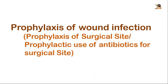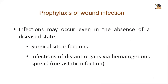In this video, we will explain prophylaxis of wound infection, or prophylaxis of surgical site. We will try to learn the prophylactic use of antibiotics for surgical site. Infections may occur even in the absence of a disease state — examples include surgical site infections and infections of distant organs via hematogenous spread, that is metastatic infection. We will discuss surgical site infections and their prophylaxis, while prophylaxis for metastatic infections will be discussed in our next video.